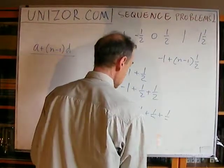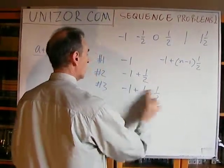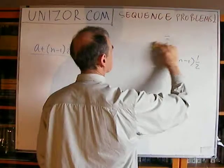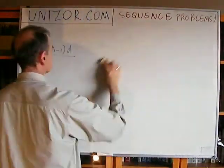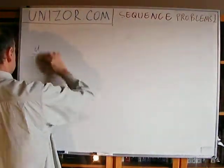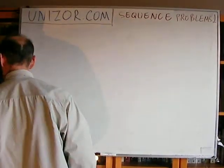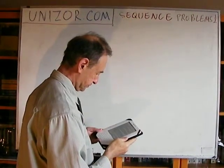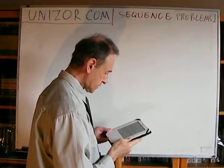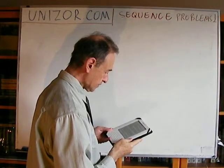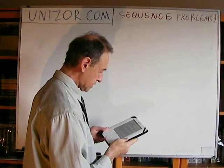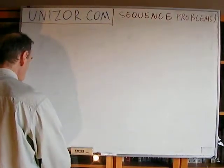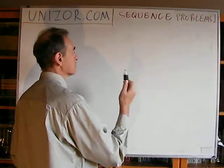All right. As I said, these are not really problems — these are illustrative examples. These are all very simple things. Next: figure out the formula that describes the sequence of integers starting from one and increasing in absolute value by one on each step, simultaneously changing sign. This is an example of a sequence which is not an arithmetic progression.